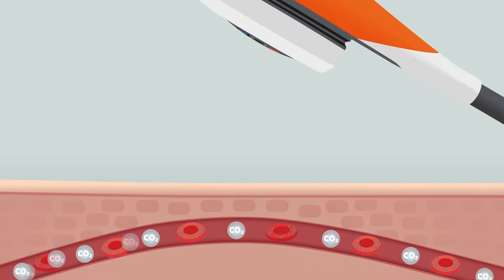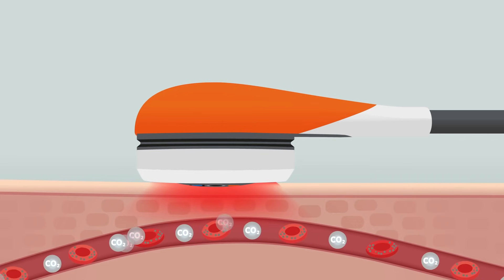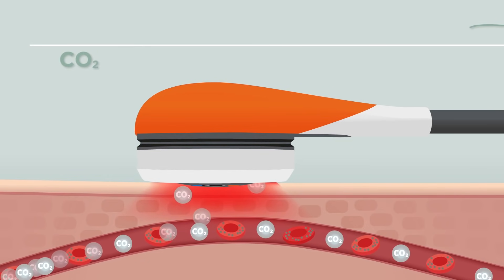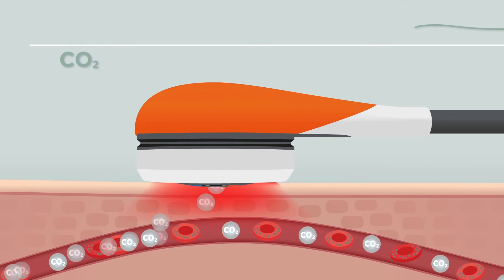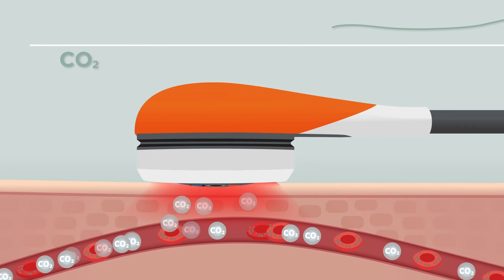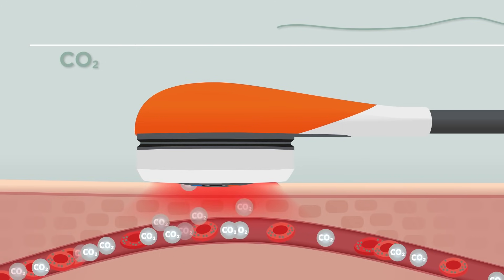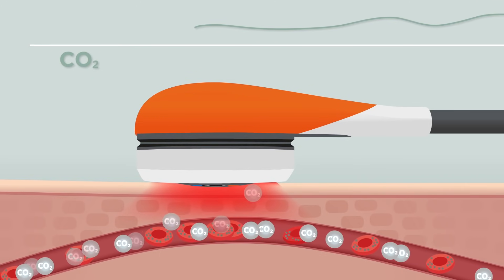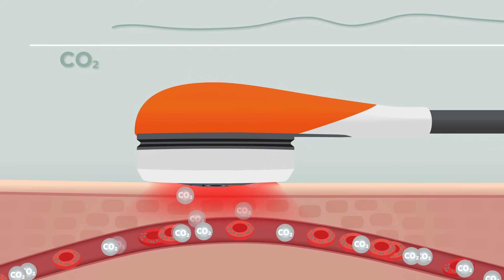The Sentec sensor gently heats the monitoring site, encouraging blood flow and the diffusion of carbon dioxide molecules across the skin and through the sensor membrane, where a measurable reaction occurs. Proprietary algorithms translate the measurement into a reliable value tightly correlated to arterial carbon dioxide.